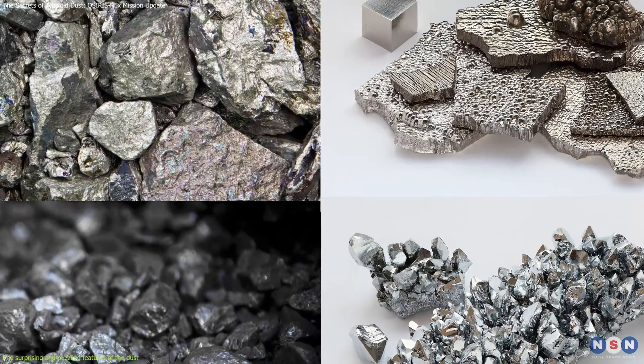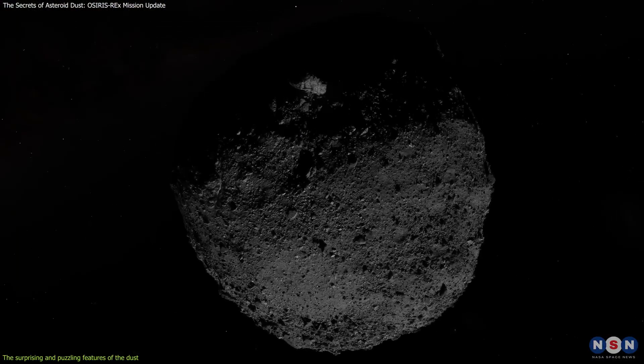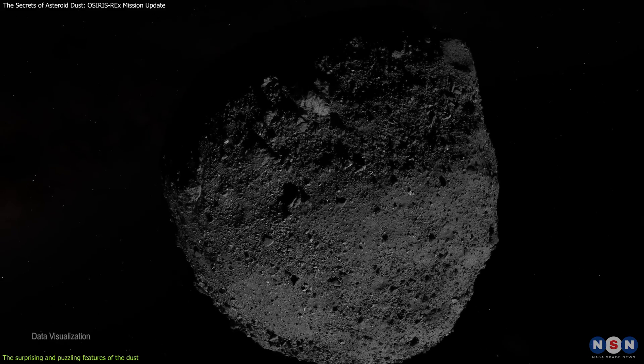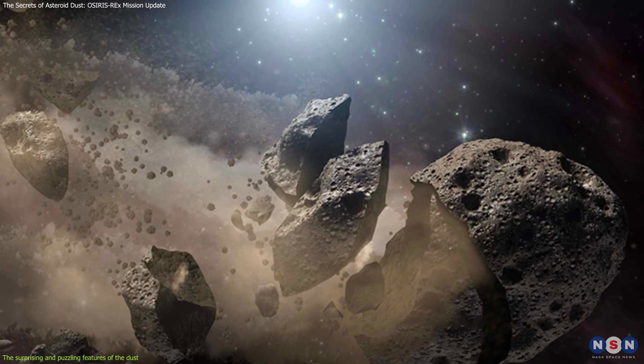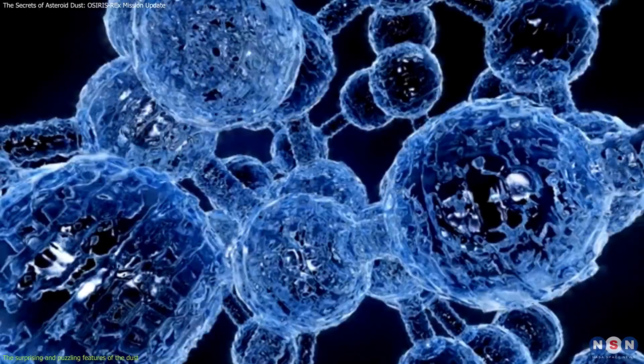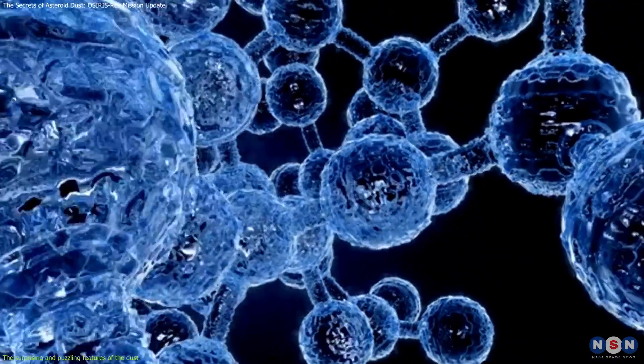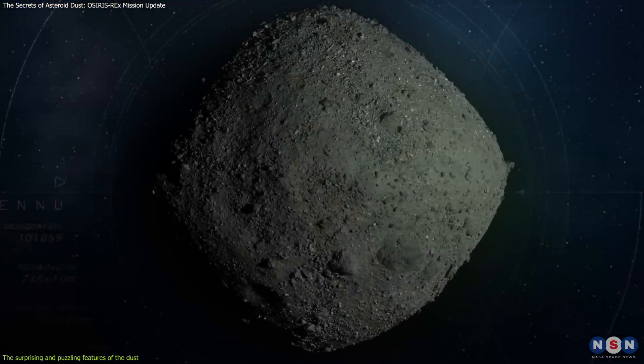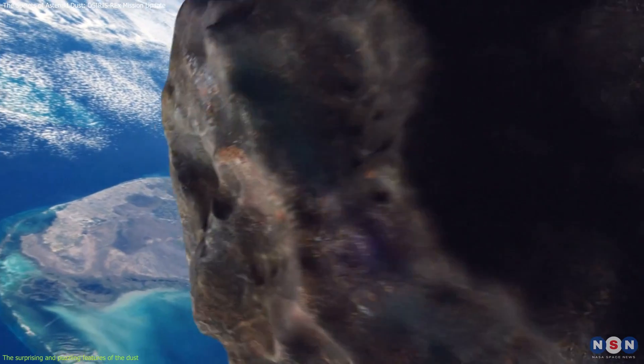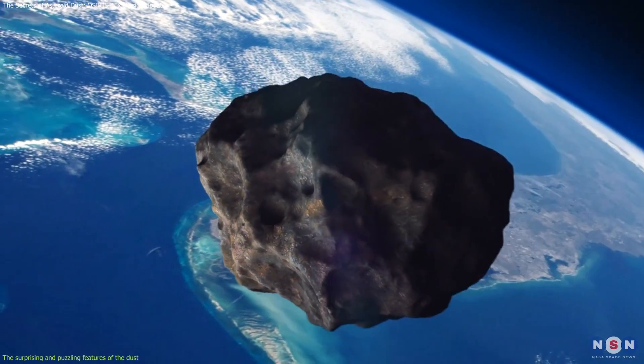The rare combination of elements could suggest that Bennu is a remnant of a larger and more diverse parent body that was destroyed by collisions or other processes. The hydrated minerals and organic molecules could imply that Bennu was once warm and wet, and that it could have delivered the building blocks of life to Earth or other planets.